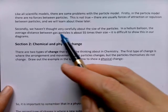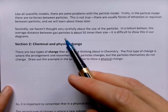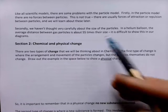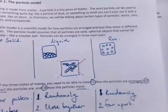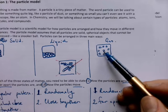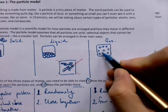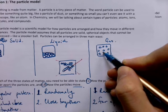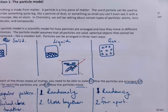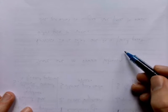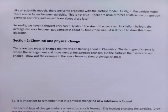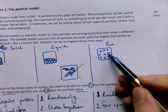The second problem is particle size. In a helium balloon, the average distance between gas particles is about 55 times their size, which is difficult to show on a diagram. In our gas particle model, the particles appear much closer together than they really are — really you'd fit maybe two gas particles across your screen, that's how far apart they are. We use the model knowing the particles are actually much further apart.